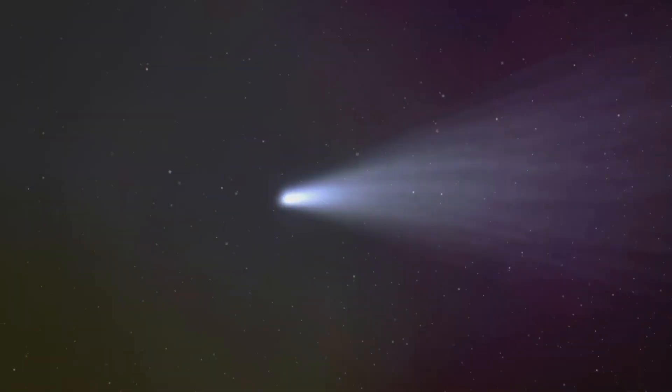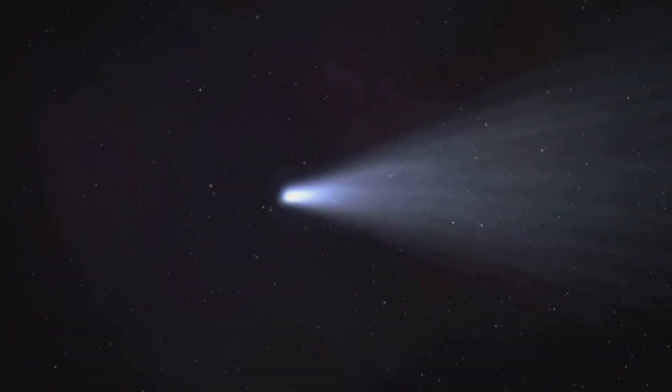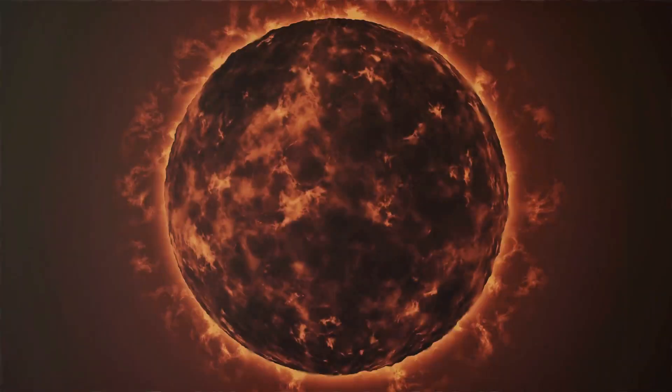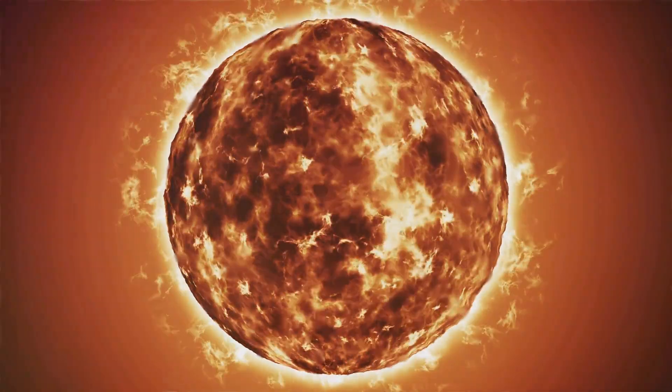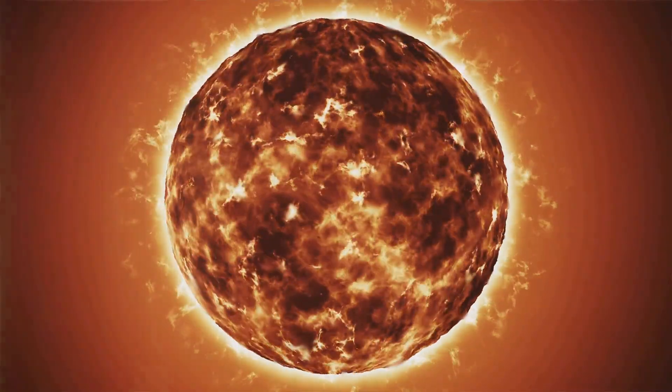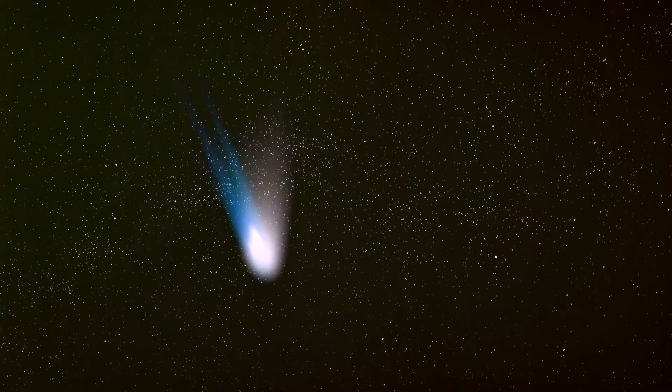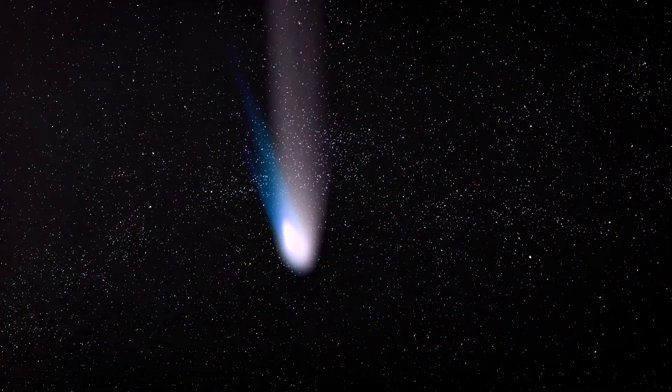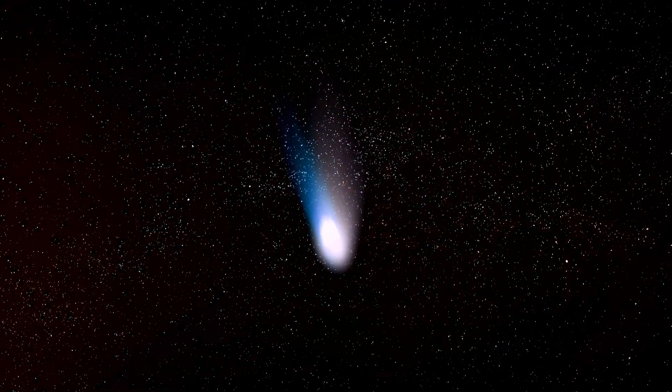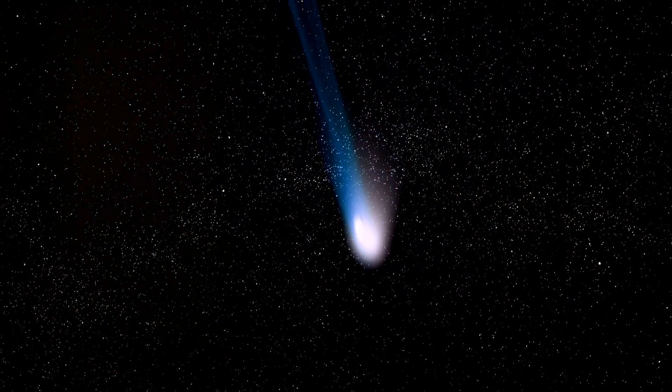As the icy object approaches the sun, it begins to warm up. This warming process is gradual but relentless, transforming the once frozen body into something entirely different. The sun's heat sublimates the ices, that is, it causes them to transition directly from a solid to a gas, creating a glowing coma or atmosphere around the icy nucleus. This transformation is both beautiful and dramatic.